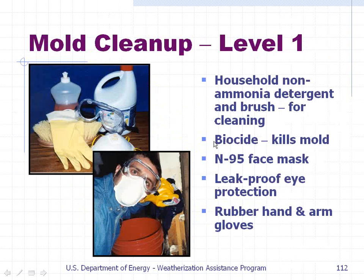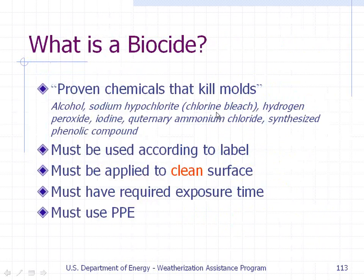For a Level 1 mold cleanup, you use household non-ammonia detergent and a brush for cleaning, a biocide to kill the mold, an N95 face mask, leak-proof eye protection, and rubber hand and arm gloves. Biocides are proven chemicals that kill molds — including alcohol, sodium hypochlorite (chlorine bleach), hydrogen peroxide, iodine, quaternary ammonium chloride, and synthesized phenolic compounds. They must be used according to label, applied to a clean surface, with the required exposure time, and with personal protective equipment.